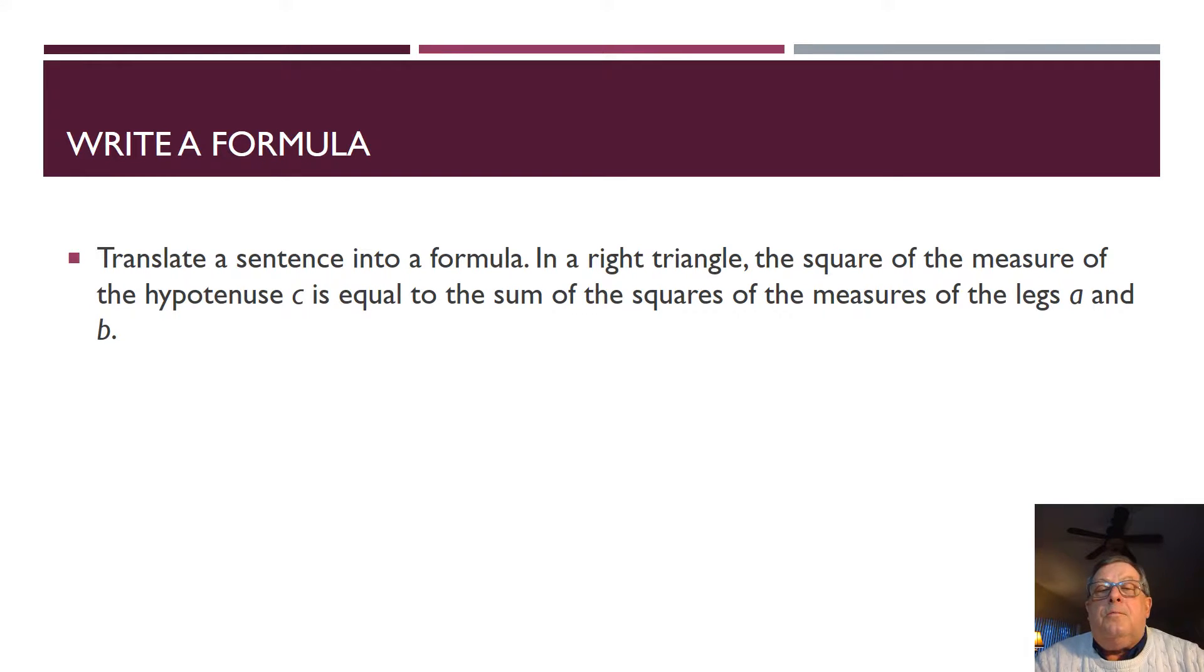So, in a right triangle, the square of the measure of the hypotenuse, which we're going to define with the variable C, is equal to the sum of the squares of the measures of the legs A and B.